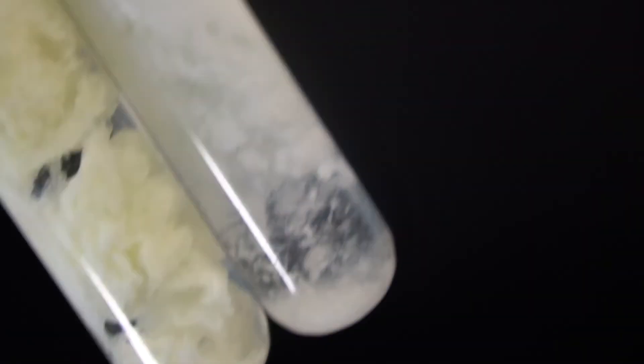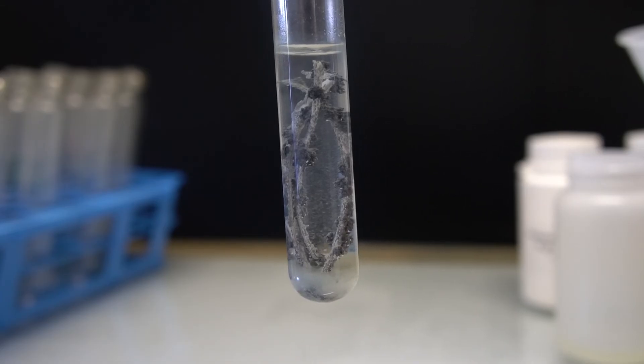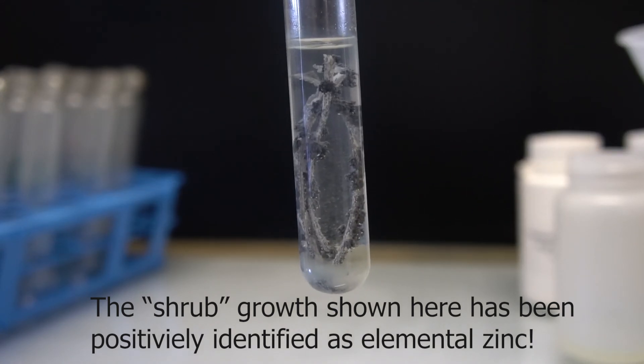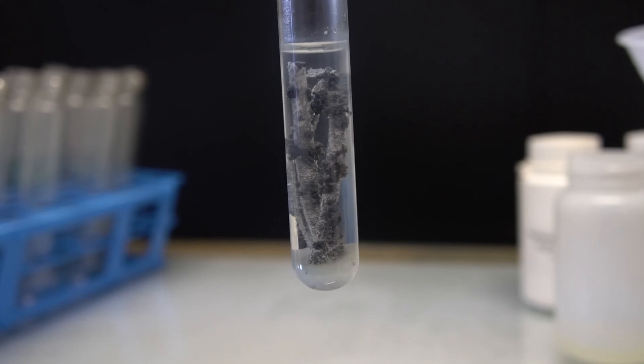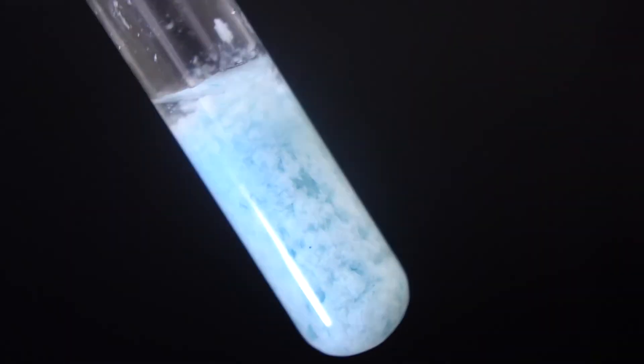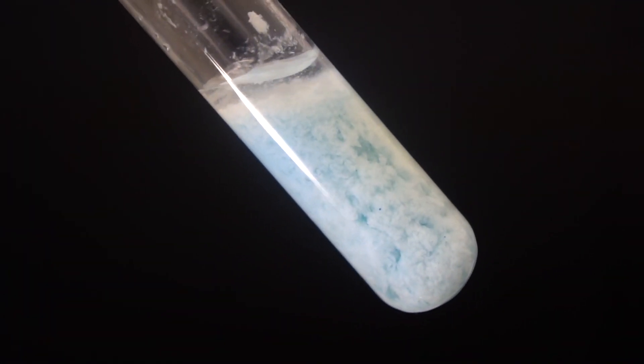The slight blue color in our final zinc ferrocyanide preparation was most likely from iron and copper impurities in the magnesium ribbon. From what I can tell, we are one of the first groups to ever show this reaction happening, producing elemental zinc without electrolysis. This is really interesting because it opens up a potentially easier method of producing elemental zinc.